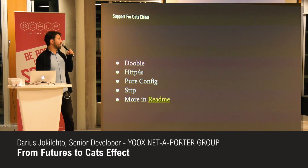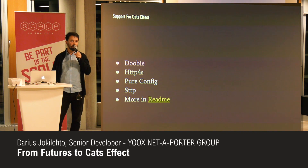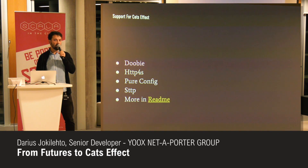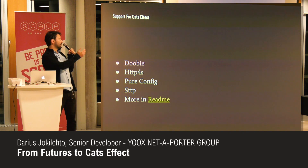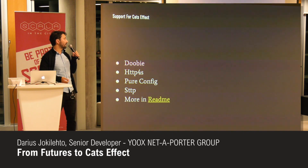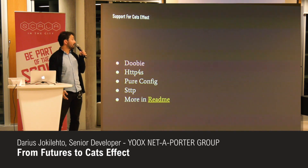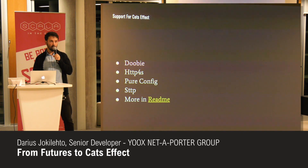One of the first things I look at when we want to use a new library is: is it supported in the wild? Cats Effect has a fair bit of support — it's part of the Typelevel ecosystem. So you get support for Doobie, http4s, pureconfig, sttp — these are kind of familiar names. There are quite a few more in the readme if you want to see what other libraries are supported out of the box.